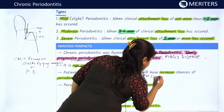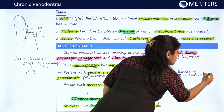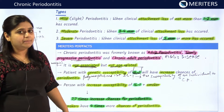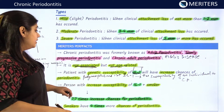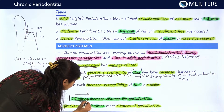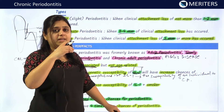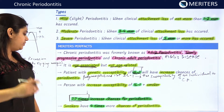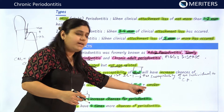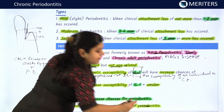Polymorphisms in interleukin-1 increase the susceptibility of an individual to chronic periodontitis. A person with genetic susceptibility who is also a smoker has 7.7 times increased chances of chronic periodontitis — this frequently comes in MCQs. In smokers, there are 4 times more chances of chronic periodontitis than in non-smokers.